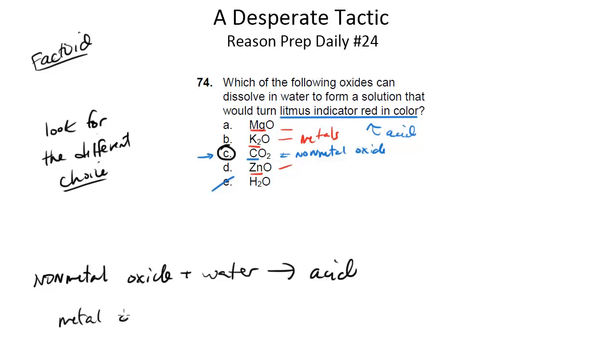a non-metal oxide plus water gives you an acid. Whereas a metal oxide plus water gives you a base. So it totally makes sense in this case why the one that's different would be the answer because it's basically what the question's testing. So here's a case where you can use this desperate tactic to look for the different choice to at least get a really good guess. And in this case, it gets you the answer.